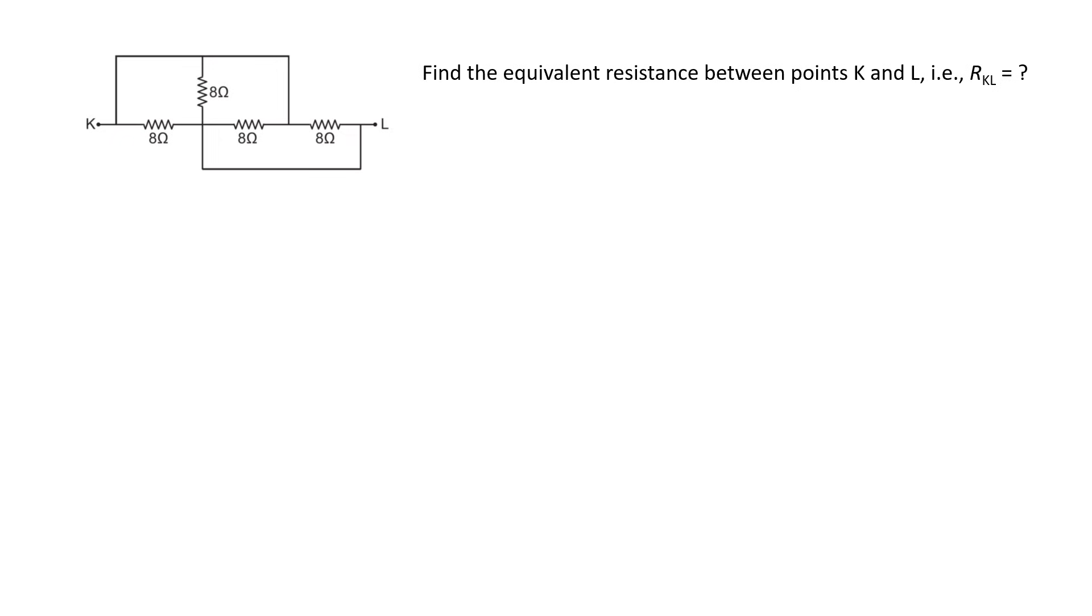Hello everyone, today we are given a very interesting problem where we have to find equivalent resistance between points K and L for this network. At first glance, it's really hard to identify whether any of these resistors are in parallel to each other or in series. How do we solve this kind of problem? Well, let's magnify this network and let's see what points are common between all four resistors.